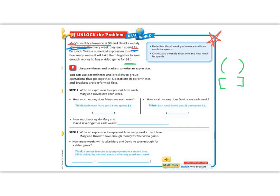Write an expression to show how much Mary and David save each week. How much money does Mary save each week? Well, think, she gets $8, and she spends $2. So that's going to be in our parentheses. And then David gets $5, and he spends $2.